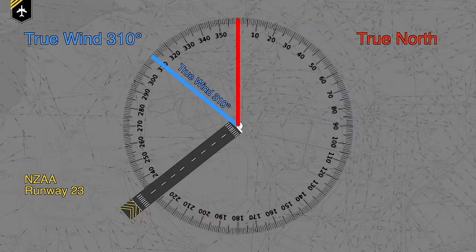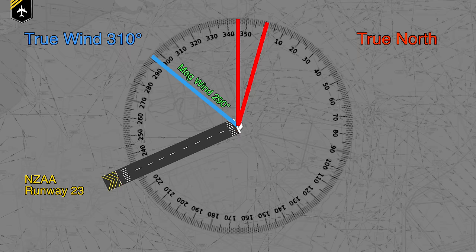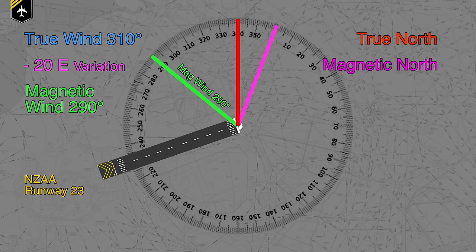Note that the wind direction is in degrees true and not in degrees magnetic and often will not match your compass. At Auckland Airport the variation between the true and magnetic is about 20 degrees east, which can make a significant difference. It is often said that if you read a wind, it is in degrees true. If you hear it — given by ATC or by tower — it's in degrees magnetic.